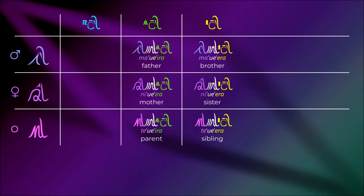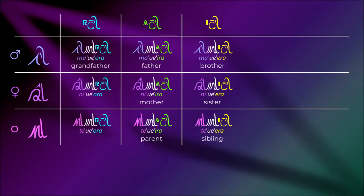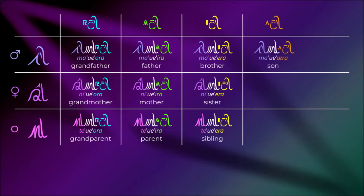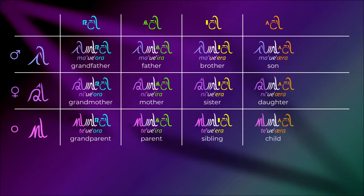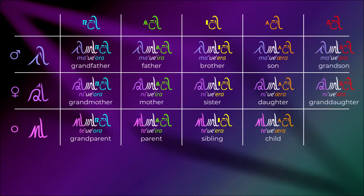Another generation up, same structure, same pattern: ma-ue-ora, ni-ue-ora, te-ue-ora — grandfather, grandmother, grandparent or grandparents. Then the younger generation: ma-ue-aira — a son; ni-ue-aira — a daughter; te-ue-aira — a child or children. And the final category — I guess no one will be surprised: ma-ue-ara, ni-ue-ara, te-ue-ara — grandson, granddaughter, grandchildren. With this basic structure, you have 15 words to describe your immediate family members.